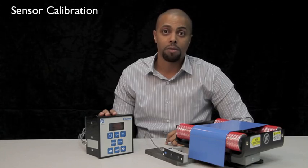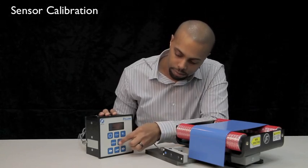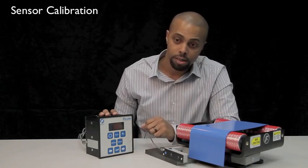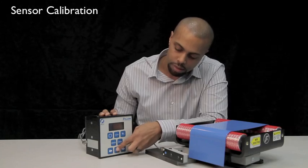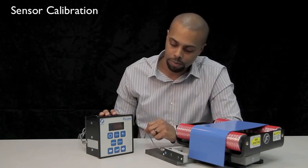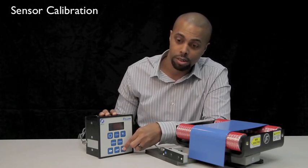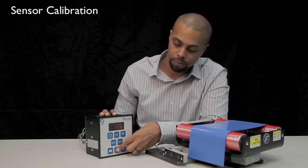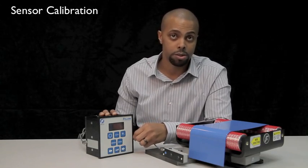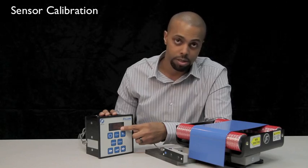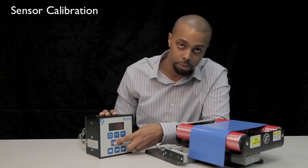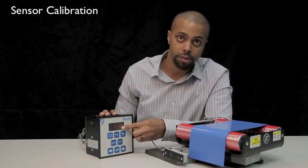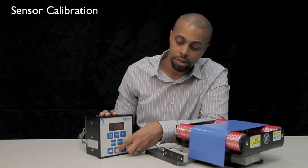To calibrate your edge sensor, first press the setup button, then select the enter button to choose the basic menus. Next, press your right arrow until you see calibration and press enter. Verify you have the correct sensor selected on your display. If it is not the correct sensor, press your sensor button until you have the correct sensor displayed. Then press your enter button.